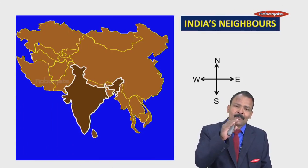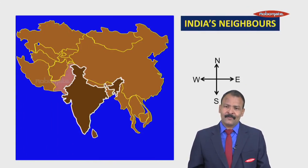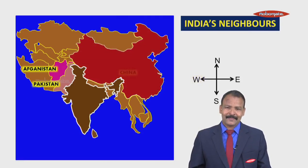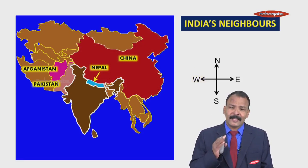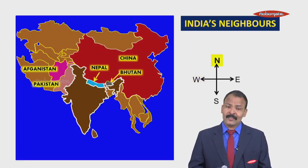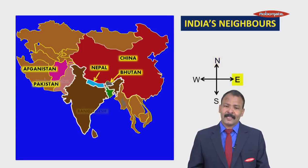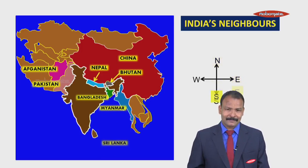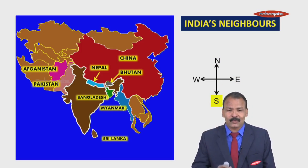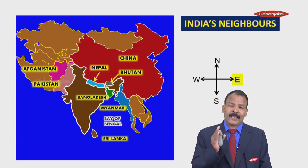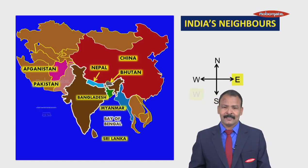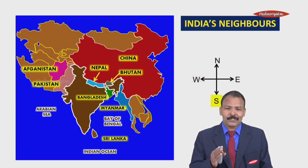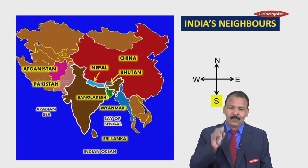India's neighbors: Pakistan and Afghanistan lie to the northwest. China, Nepal, and Bhutan lie towards the north. Bangladesh and Myanmar lie towards the east. Sri Lanka lies towards the south. The Bay of Bengal lies to the east, the Arabian Sea lies to the west, and the Indian Ocean lies to the south.